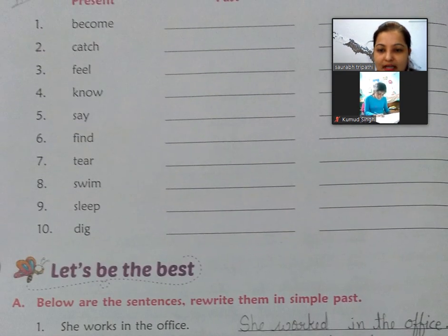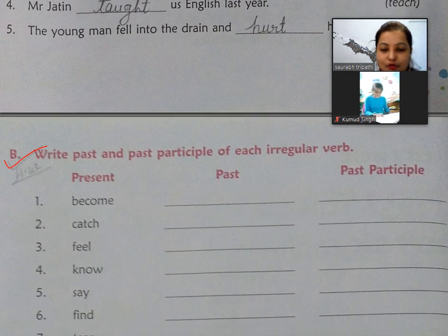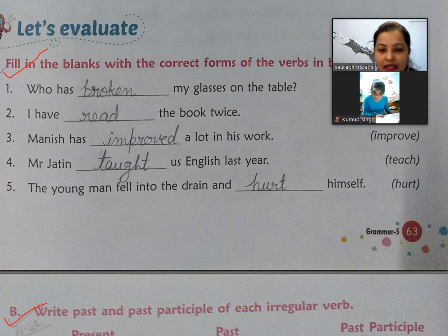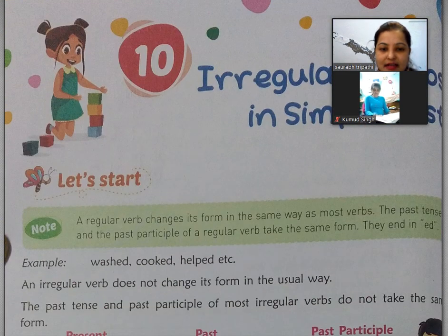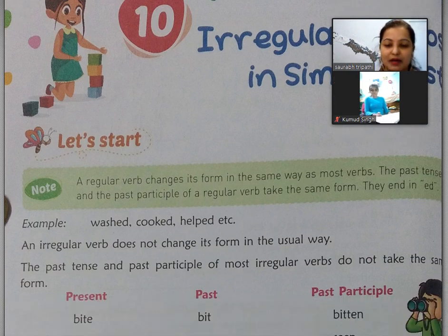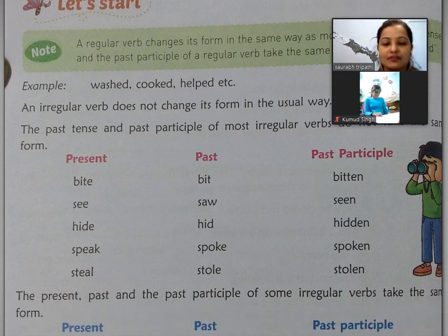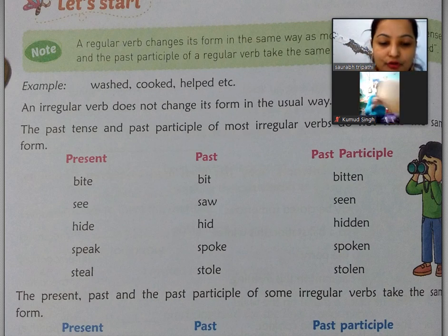Toh abhi tak meine copy mein karne ke liye sirf fill in the blanks exercise batayi hai. Baaki exercises aapko learn bhi karni hain — learn aapko sab karna hai. Toh chaliye aaj humne kya padha: verb kya hota hai, irregular verb ko hum simple past mein change karte hain — past aur past participle mein. Inhe hum verb ki first, second, third form kehte hain. You will have to learn all the forms. Chaliye aaj ki class ko yahi end karte hain — we will meet in next class tomorrow. Till then complete your homework. Good day.